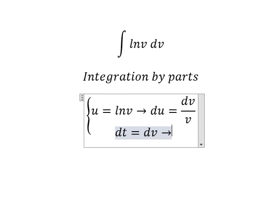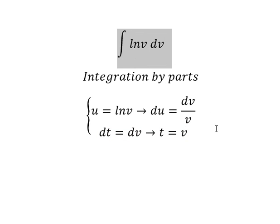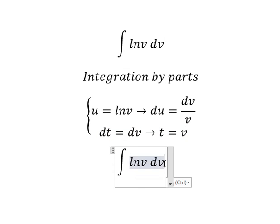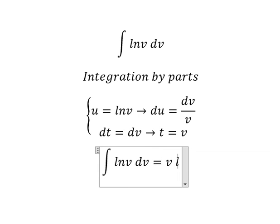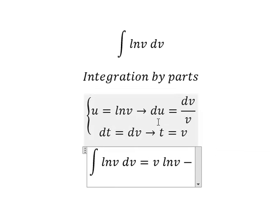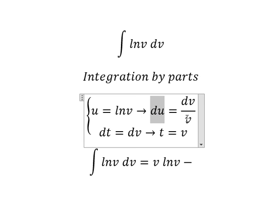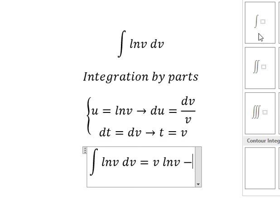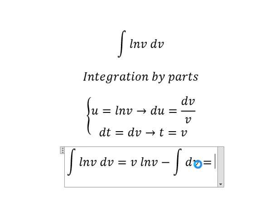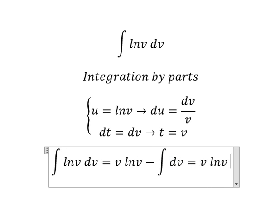So we have u multiplied by t minus we have du multiplied by t. So we have the integration of dv and now we have the final answer.